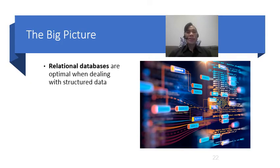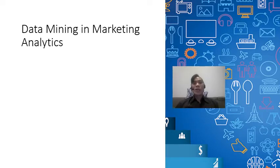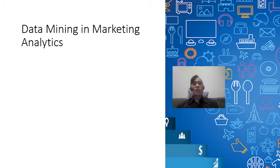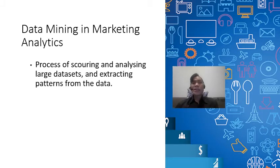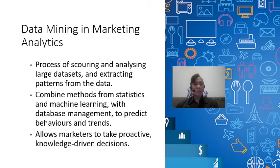The big picture here is that relational databases are optimal when dealing with structured data, but when dealing with non-structured, semi-structured, or unstructured data you will need non-relational databases. Now we can see how data mining happens in marketing analytics, because with so many types of data sources available, data mining can be used to analyze both relational and non-relational data sources. The process starts by sourcing and analyzing large datasets in different forms and extracting usable patterns. They then combine methods from statistics and machine learning with database management to predict behaviors and trends, and when the models are created it allows marketers to take proactive, knowledge-driven decisions.